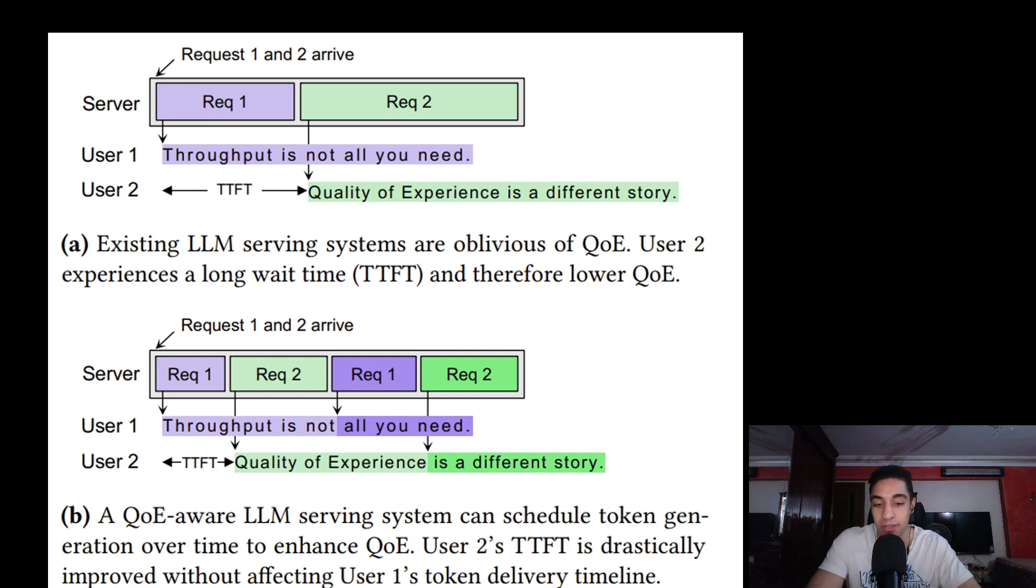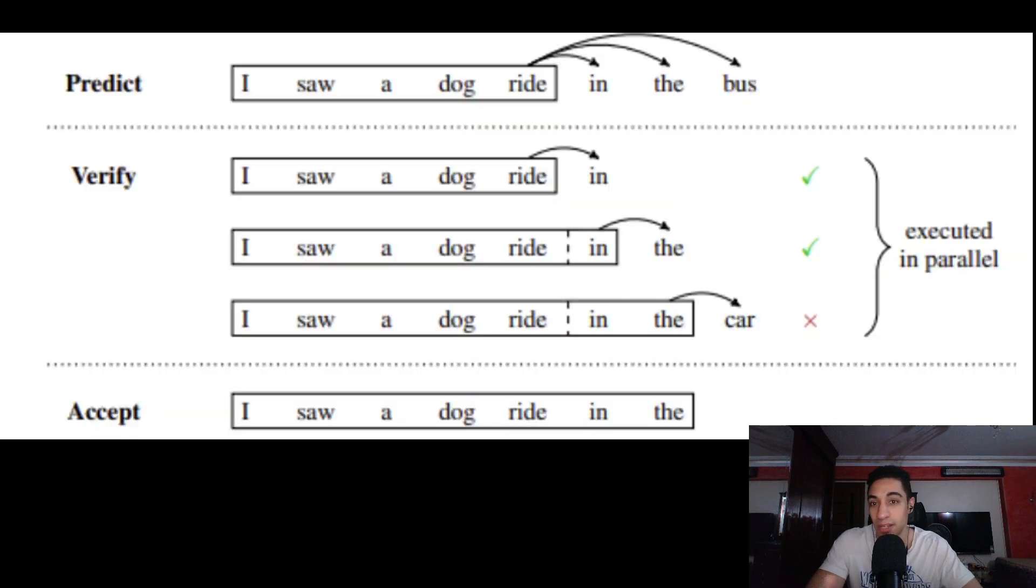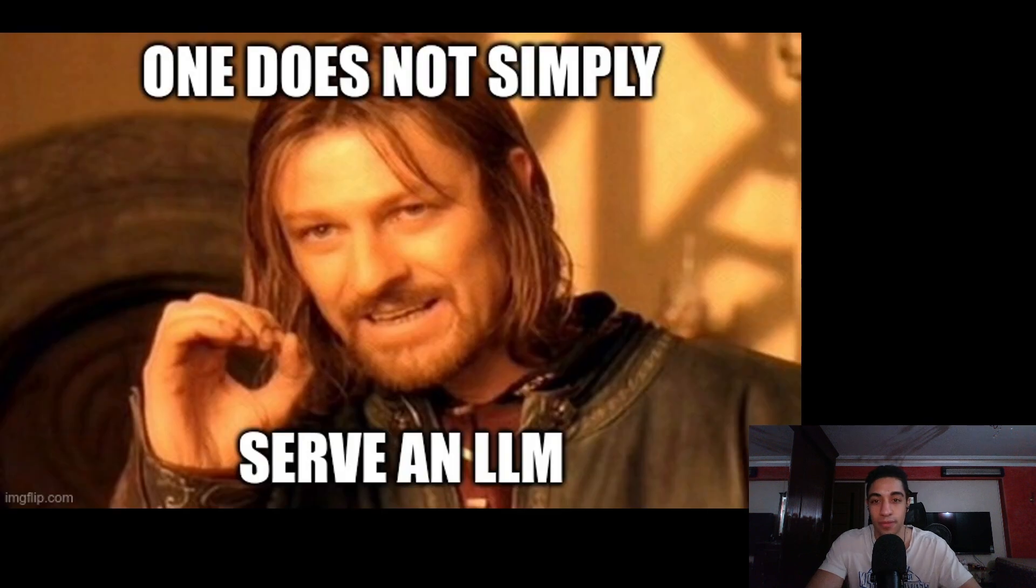One last optimization is speculative decoding, where you have a smaller model doing the response generation while the main model, the bigger model, does just verification to this generation. This way it keeps the same accuracy but does the generation faster instead of having the bigger model doing the generation. That was pretty much what I wanted to cover. These are two weeks that should improve LLM inference. Thank you and see you in the next video.